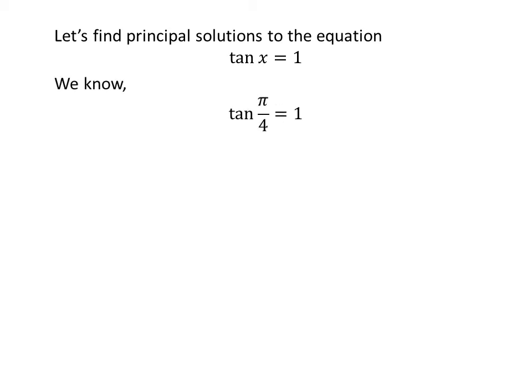We know the value of tangent of pi upon 4 is 1. We also know the trigonometry identity: tangent of pi plus a is equal to tangent of a. The proof of this identity is given in the video appearing in the upper right corner, and the link is also given in the description section.